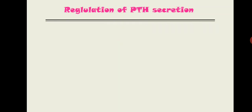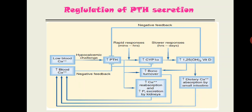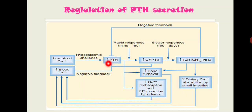The regulation of parathyroid hormone secretion: the most important stimulus for PTH release is hypocalcemia — low blood calcium. Low calcium stimulates PTH release; PTH raises blood calcium. Once calcium is sufficiently high, it negatively inhibits PTH secretion. So high calcium inhibits PTH, and low calcium stimulates PTH.